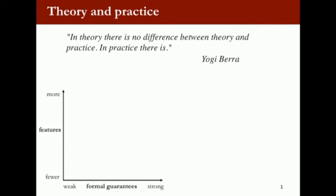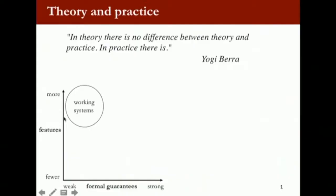I have this X and Y axis. The X axis is about formal guarantees — the more to the left, the weaker the guarantee; the more to the right, the stronger the guarantee. On the Y axis we have features. The closer to zero, you have fewer features; up on top, you have more features. So if we're looking at working systems, they actually live up here — a lot of features, but fairly weak guarantees.